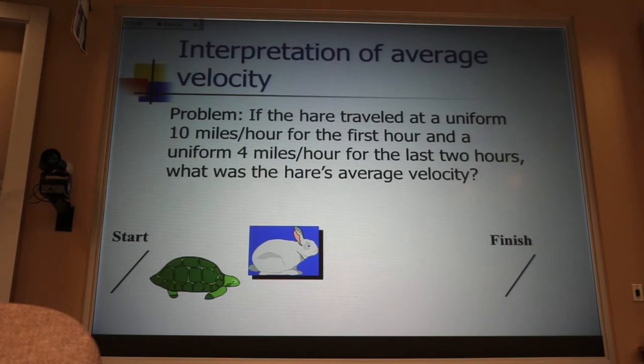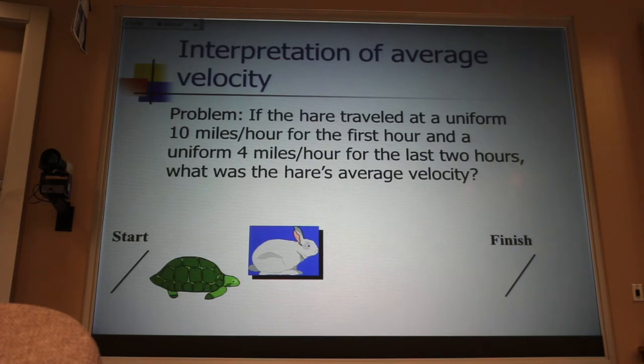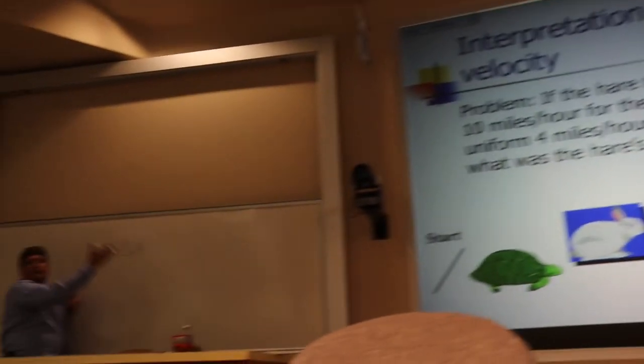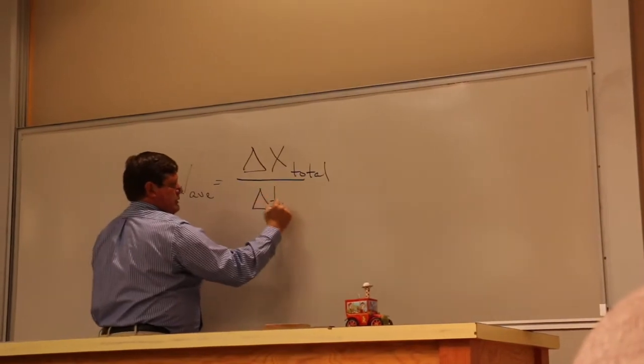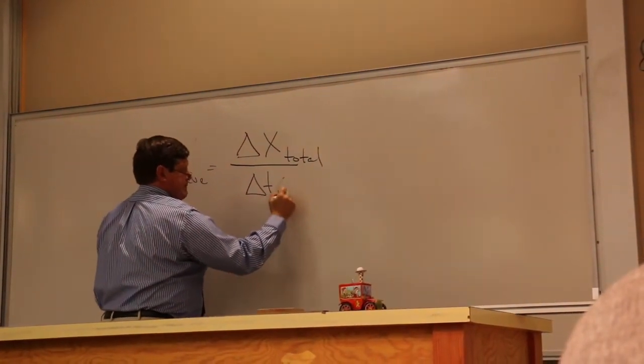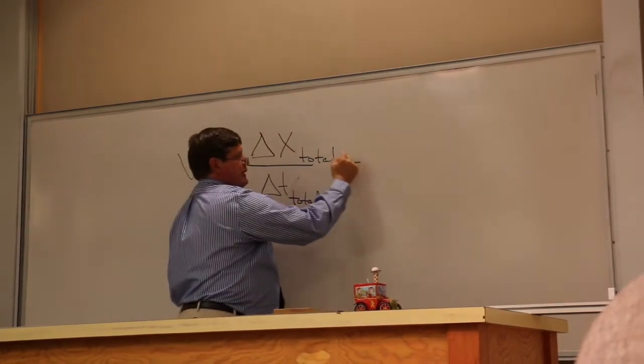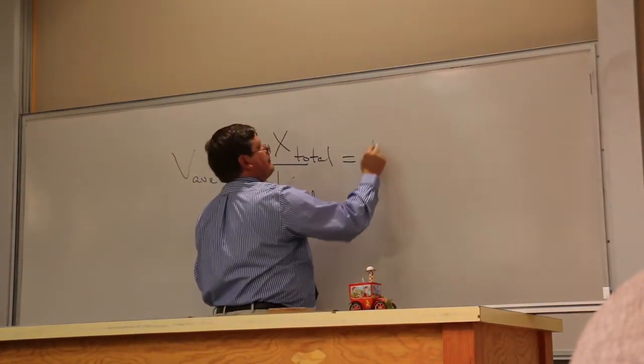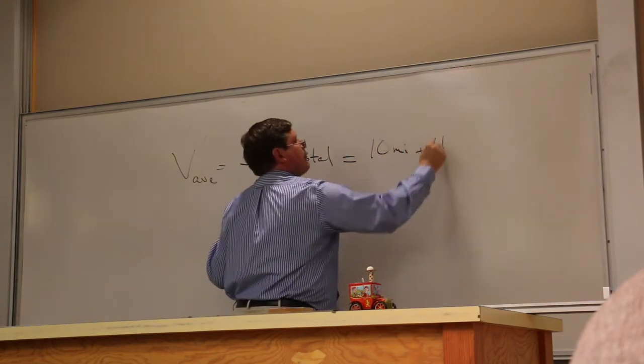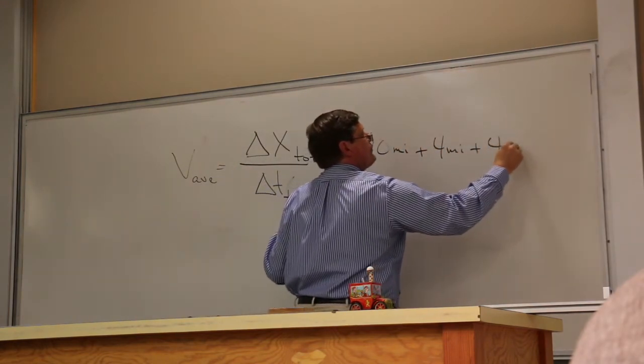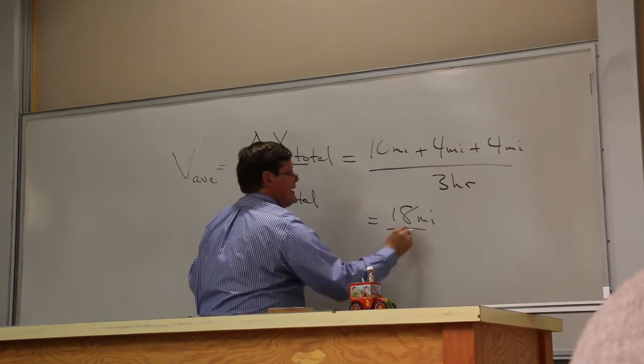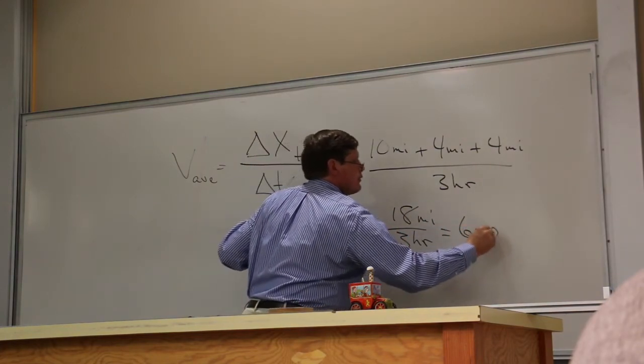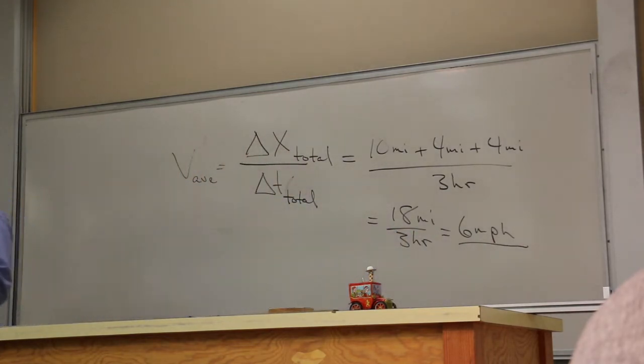The average velocity is going to be the change in position. If you're just going to the right or to the left, we use delta x. If you're just going up or down, we use delta y. It's the total displacement divided by the total time. Now, the total displacement, the bunny rabbit covers 10 miles in the first hour and 4 miles in the second hour plus 4 miles in the third hour and does that in 3 hours. So, that's going to be 18 miles in 3 hours or 6 miles per hour. Check that your neighbor is on the bus with that. It's not rocket science.